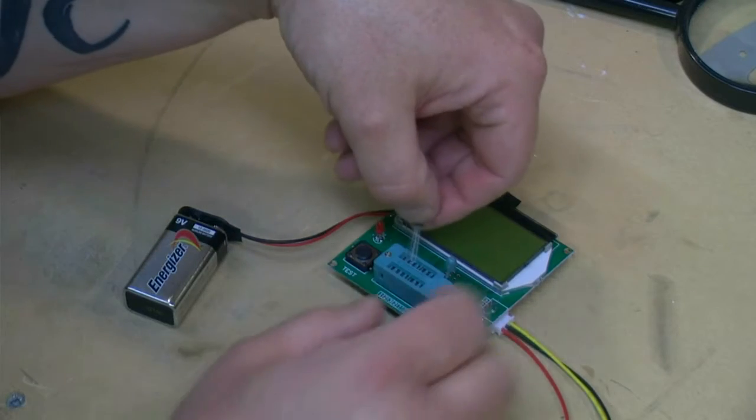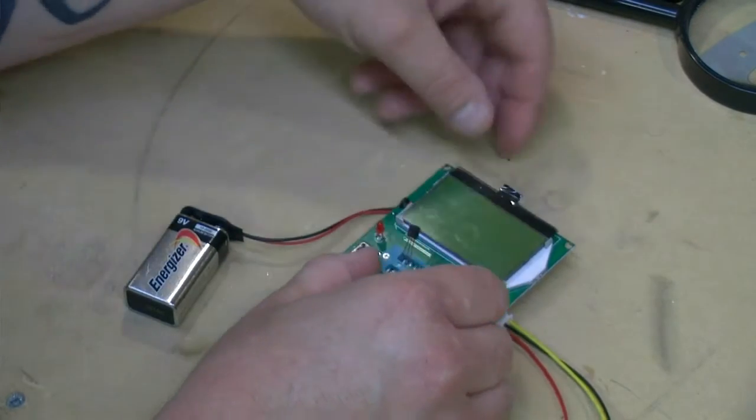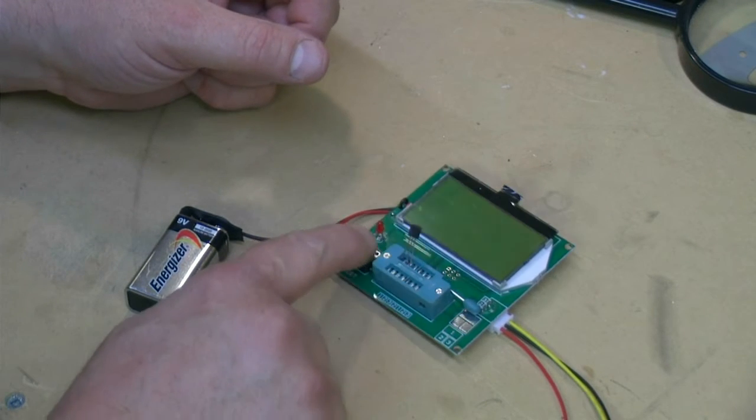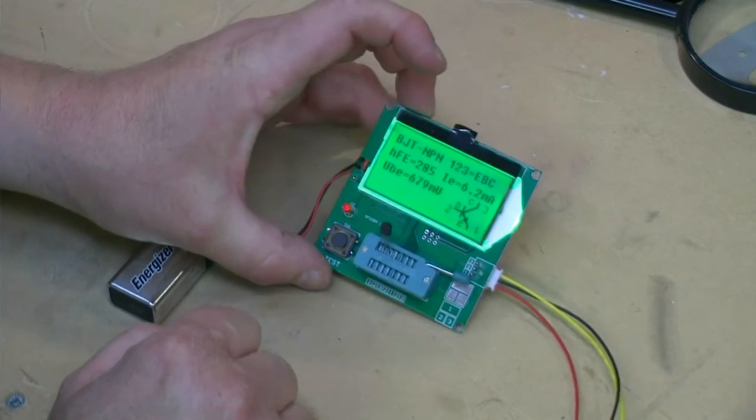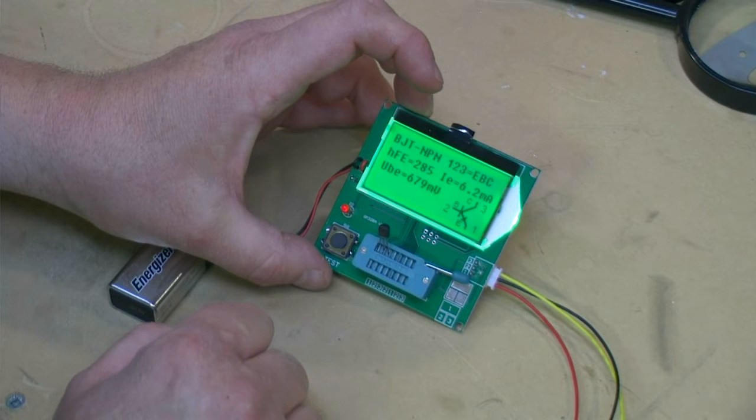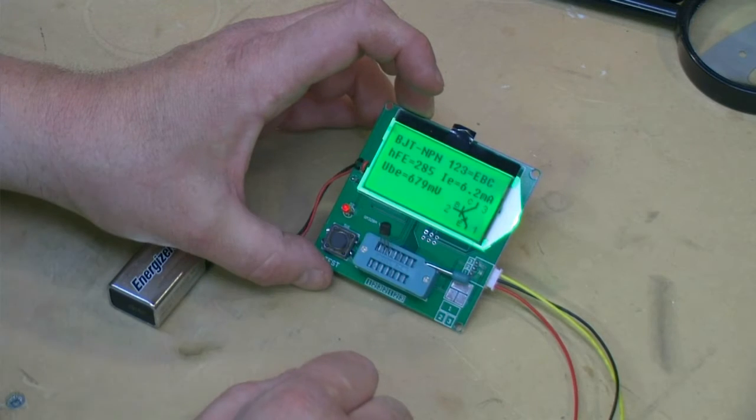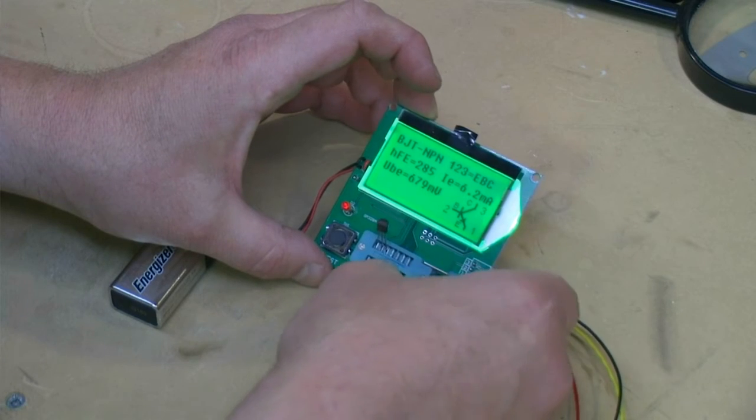You can turn it on, stick a transistor in the ZIF socket there. Powers up. It tells me it's a BJT. It tells me which lead is which, gives me a gain. It's pretty damn interesting. The cool thing about this one is it can also do caps.